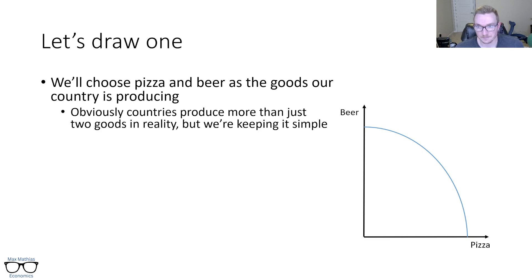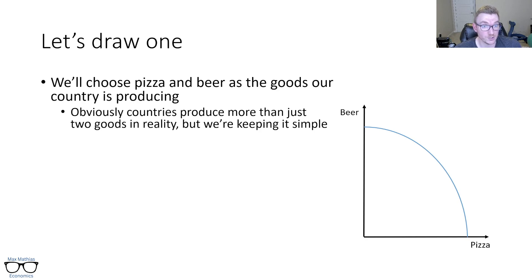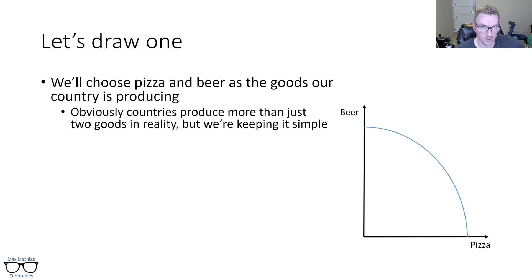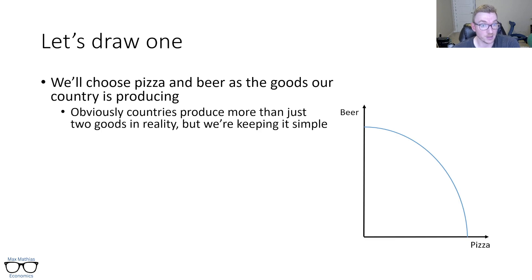It looks like this — it kind of bows out. That blue line represents the maximum a country could produce of those two things in combination with each other. Where that line hits the beer axis denotes how much beer we could make if we only made beer — all our land, labor, and capital went to producing beer, no pizza. The other side where we hit the pizza axis is the exact opposite: we're only producing pizza, no beer.